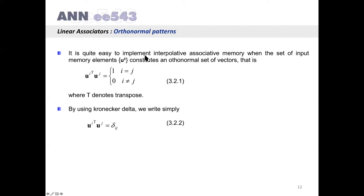It is quite easy to implement interpolative associative memory when the set of input memory elements UK constitutes an orthonormal set of vectors. That is, if we take any pattern UI and UJ from the set, then the transpose of UI multiplied by UJ — the inner product of these two vectors — results in 1 if I equals J, and 0 if they are different vectors in the set.